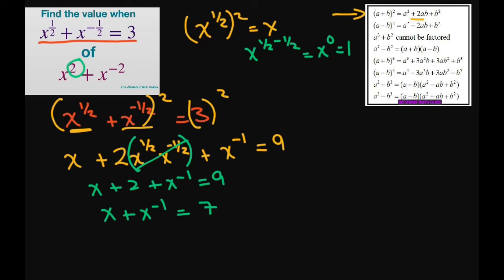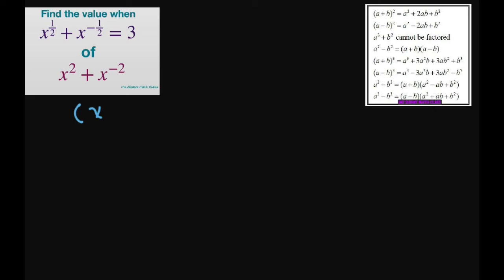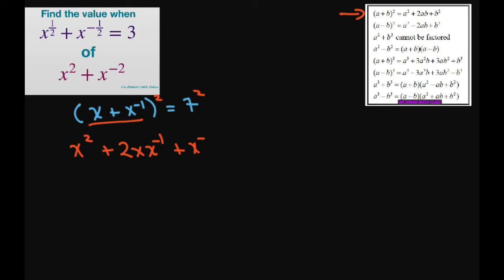And now to get x squared, what we're going to do is square both sides again. We're still using the same formula. This is going to give you x squared plus 2 times x times x to the power of negative 1, plus x to the power of negative 2.